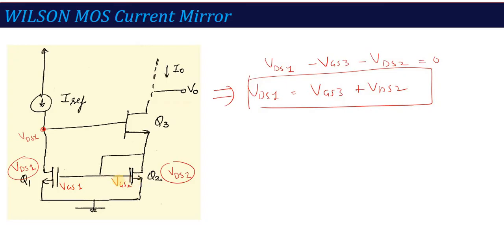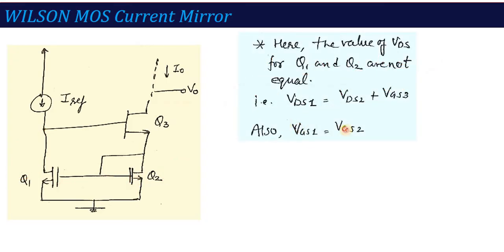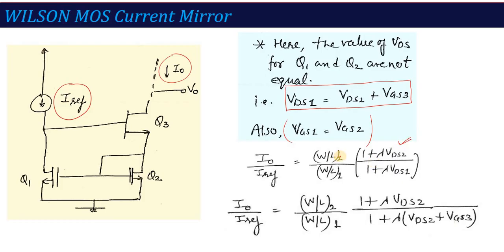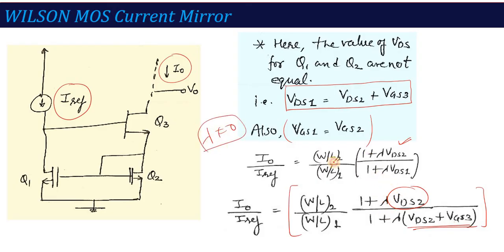We know VGS1 equals VGS2 because they form a current mirror, but VGS1 equals VDS2 plus VGS3 — they are not the same. So if I calculate the ratio of I_out to I_reference, it depends not only on geometry but also on VDS values: (W/L)2 divided by (W/L)1, multiplied by (1 + λ·VDS2) divided by (1 + λ·VDS1). Since λ is non-zero, I_out and I_reference will not be equal even if the geometry is made the same. This is the problem with the Wilson current mirror.